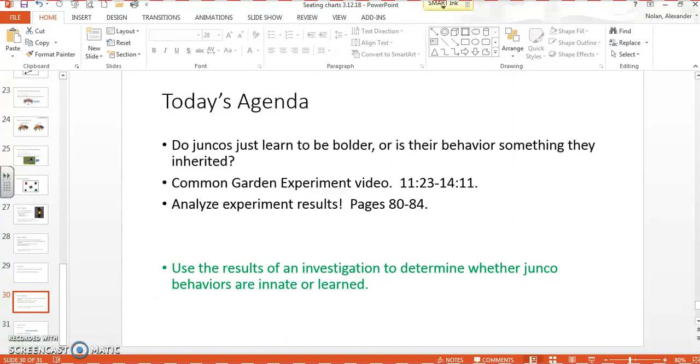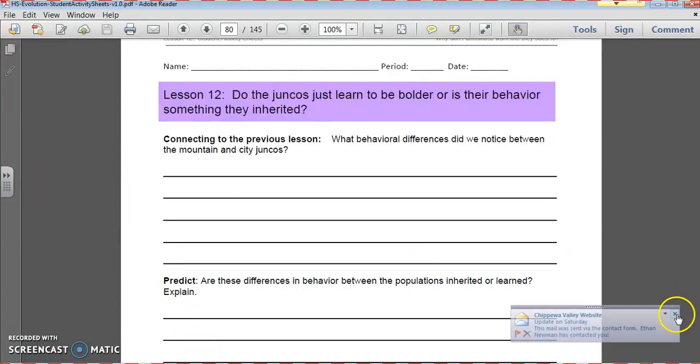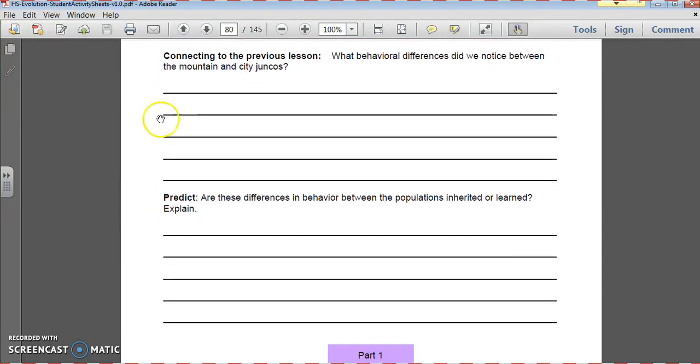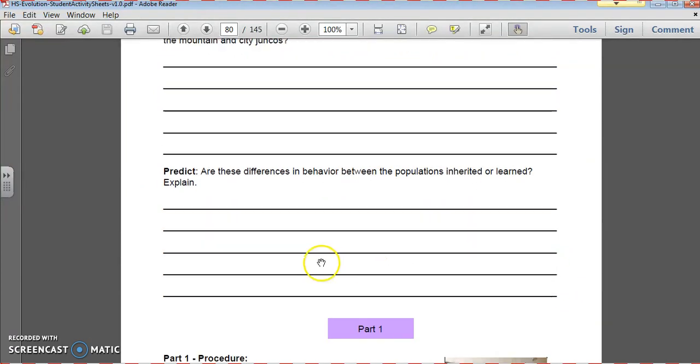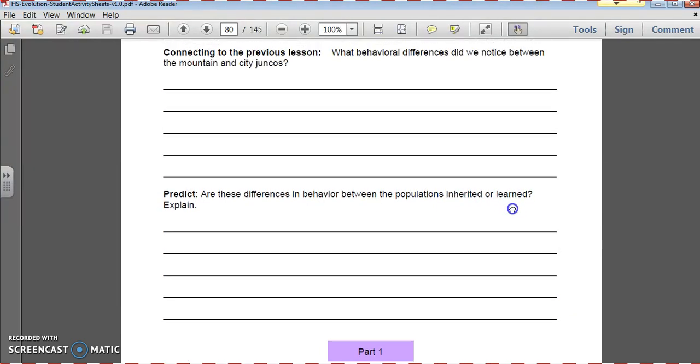So what I'd like you to do before we do anything else, jump to your student activity sheets right here where it says Lesson 12, and I want you to respond to these two questions. Connect to the previous lesson: What behavioral differences did we notice between mountain and city juncos? And then predict: Do you think that those traits are inherited or learned? If you weren't here today and you haven't done this, please pause the video at this moment and respond to these two prompts. Don't go any further until you have done that, at least in your head.